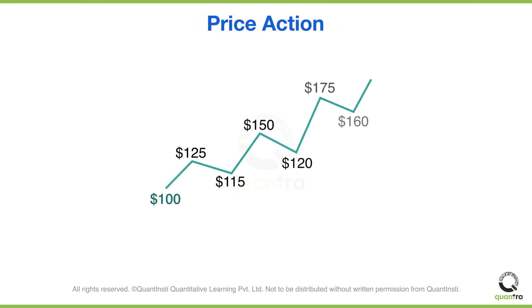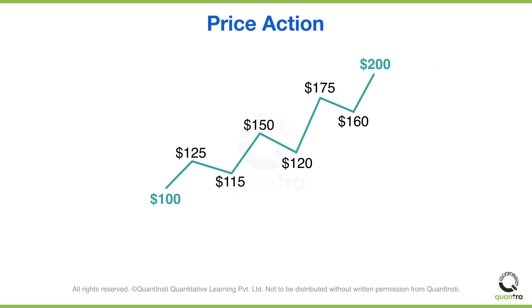Consider this price movement of a stock from $100 to $200. You can observe that instead of increasing straight from $100 to $200, the price increases in a zigzag manner. Why did this happen? This movement of the stock can be explained by the imbalance of supply and demand forces.